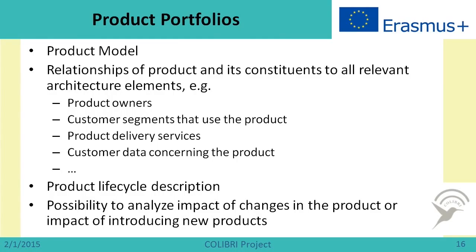Let us start with product portfolios. For product portfolios, one important thing is the product model. We think about relationships of a product and its constituents to all relevant architecture elements, such as product owners, customer segments that use the product, product delivery services, and customer data concerning the product. We could also use enterprise architecture elements to show product lifecycle descriptions, and analyze the impact of changes in a product or the impact of introducing new products on other elements of enterprise architecture.